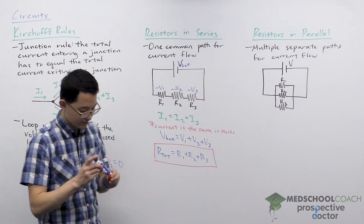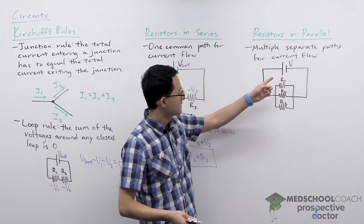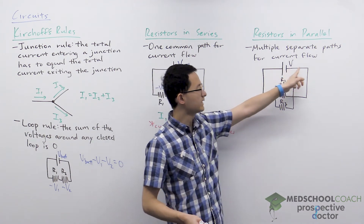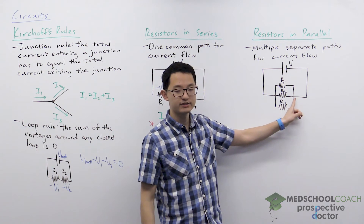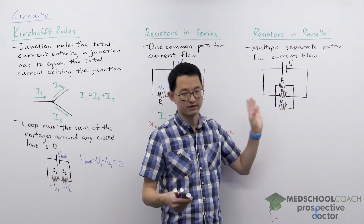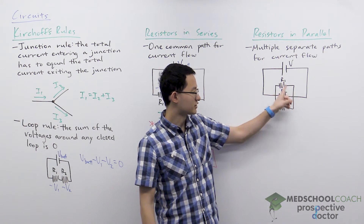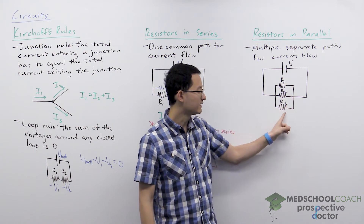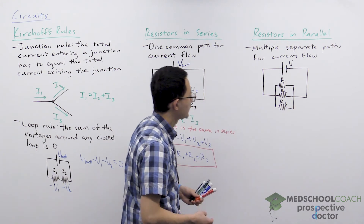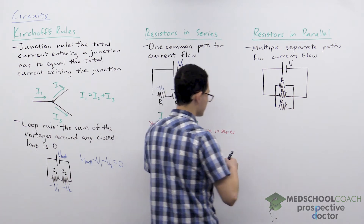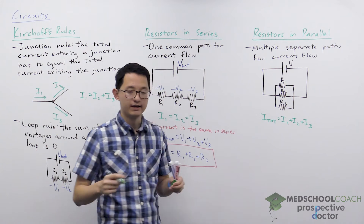Now let's look at resistors in parallel. When resistors are connected in parallel, there are multiple separate paths for current to flow. Electrons leaving the negative terminal reach a junction where, by the junction rule, the current entering must equal the current exiting. For example, if 50 electrons enter the junction and 20 go through R1 and 20 go through R2, then 10 must go through R3. The current gets split among the different pathways, so in parallel the total current is additive: I_total equals I1 plus I2 plus I3.